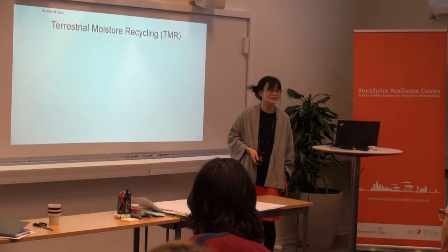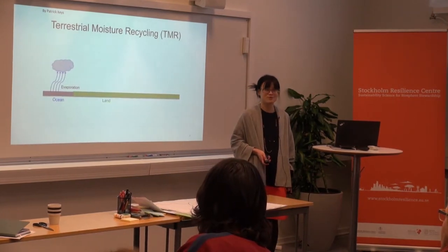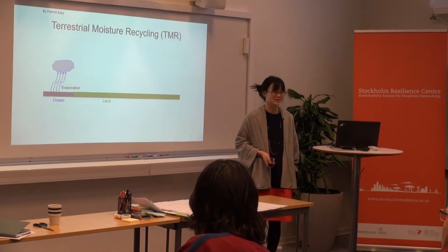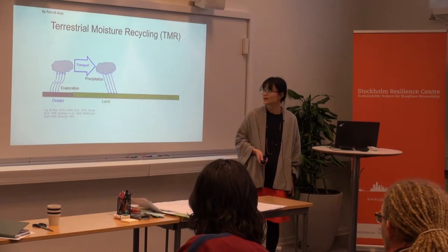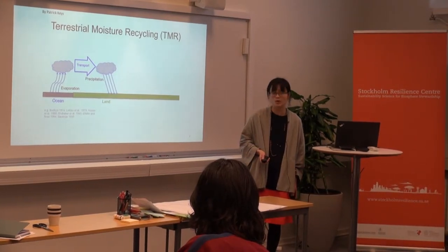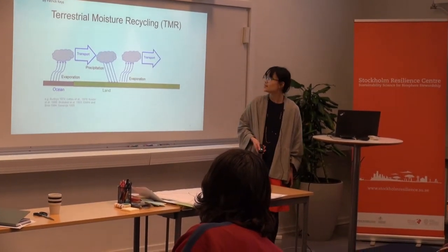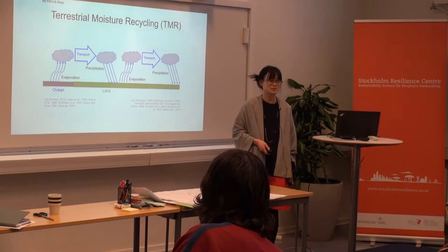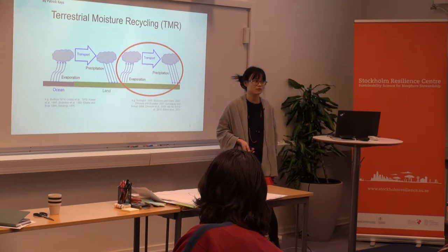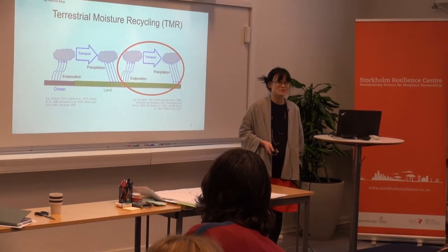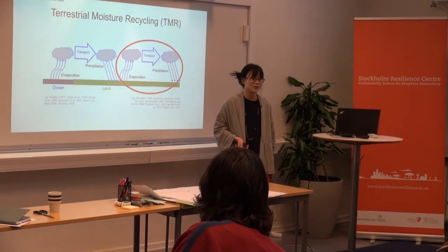So first of all, what is moisture recycling? If you think about where precipitation or rainfall comes from, it starts somewhere. You have water in the ocean that evaporates, it's transported with wind and comes down as precipitation. But then it happens again overland — you have evaporation from land, trees that transpire, and that moisture gets transported and falls as precipitation. The path that takes place overland is what we call terrestrial moisture recycling, and it's important because it means that what we do on land can also change our rainfall.